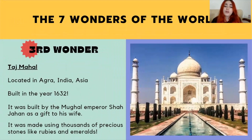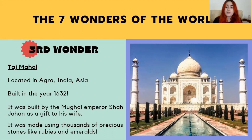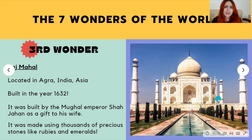Located in Agra, India, in the Asian continent, we have the Taj Mahal as the third wonder of the world. It was built in 1632 by the Mughal Emperor Shah Jahan as a gift to his late wife. It was made using thousands of precious stones like rubies and emeralds. Look at this picture — it's so beautiful. Can you believe it was built in 1632?